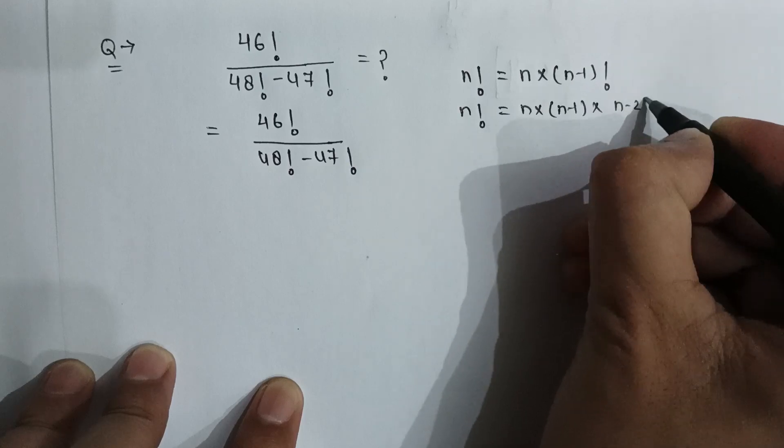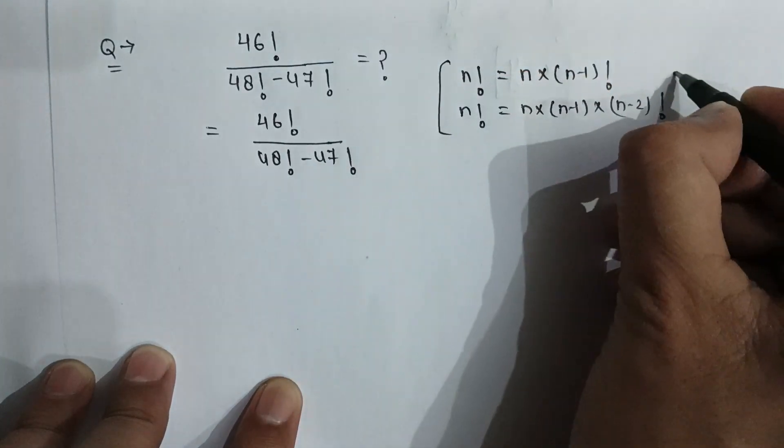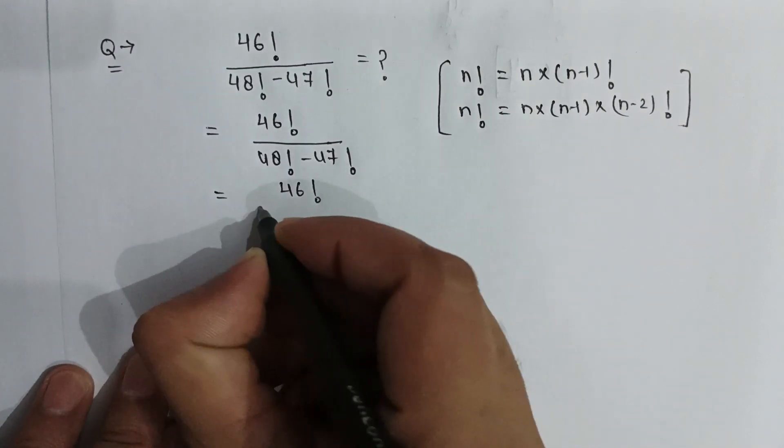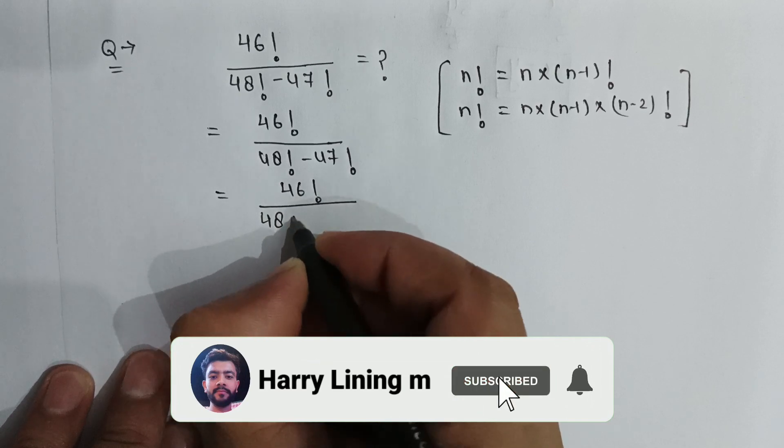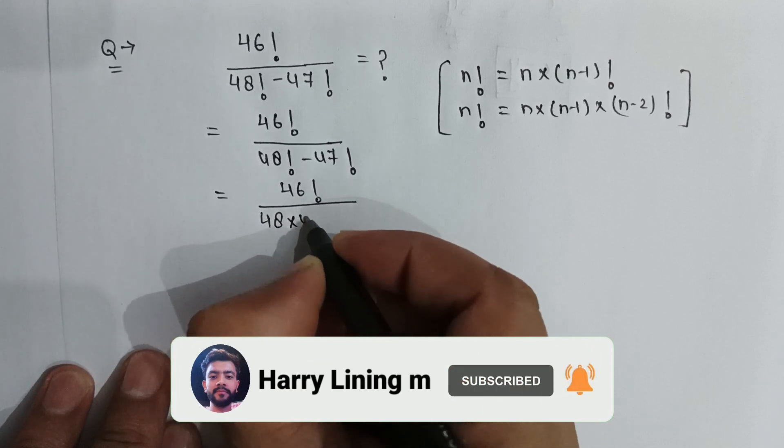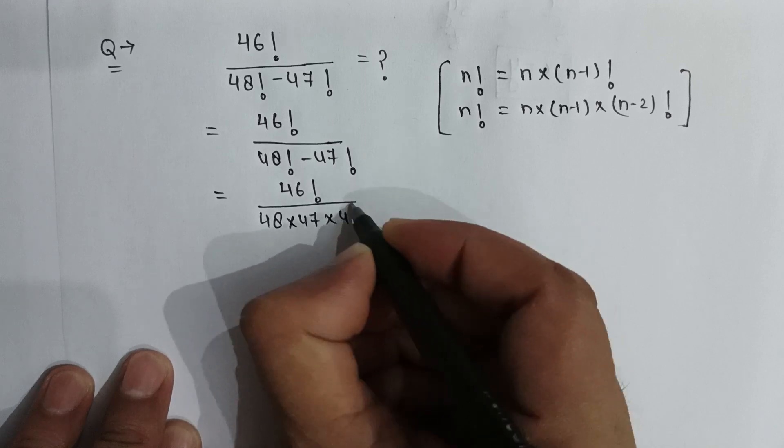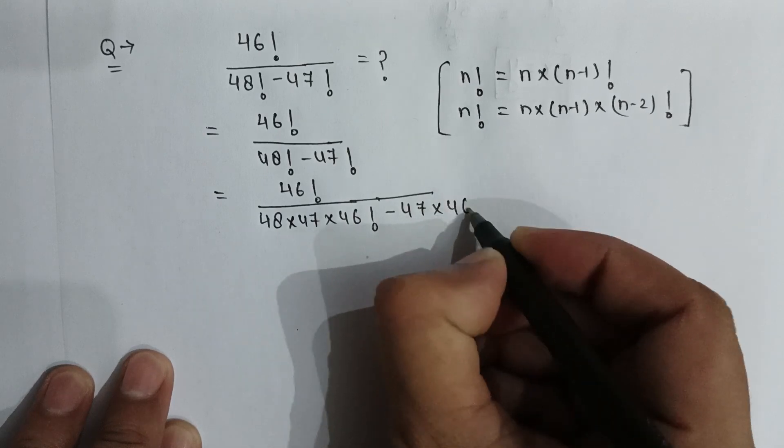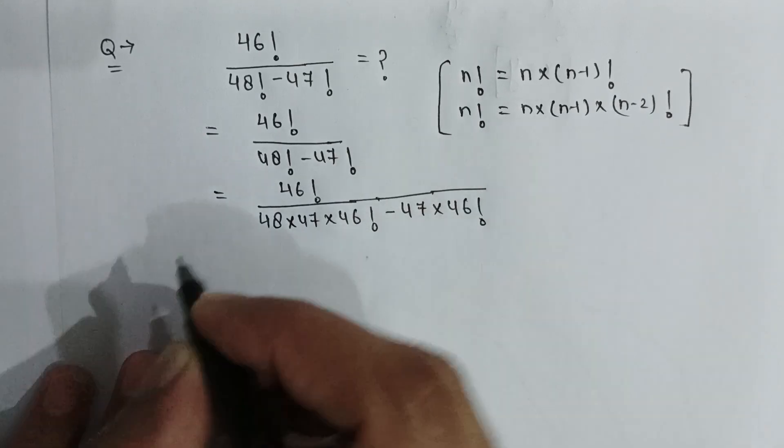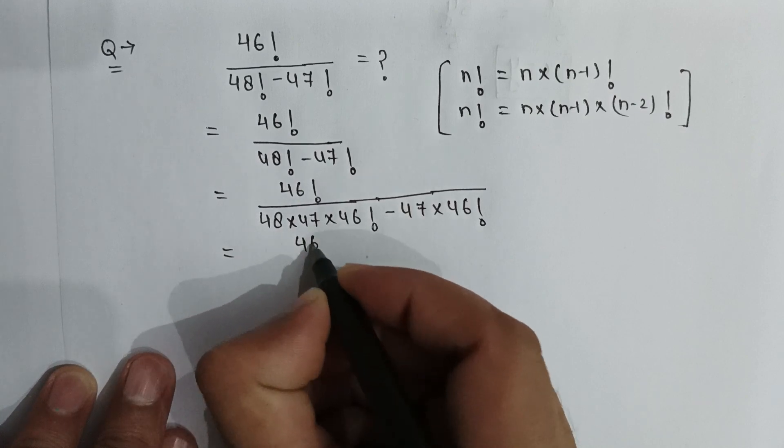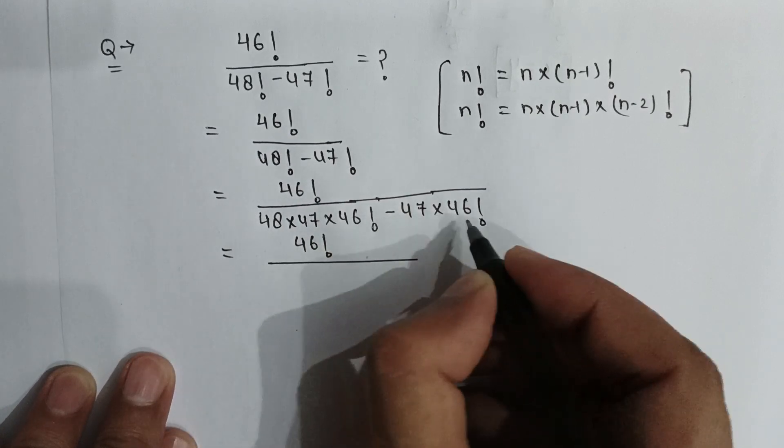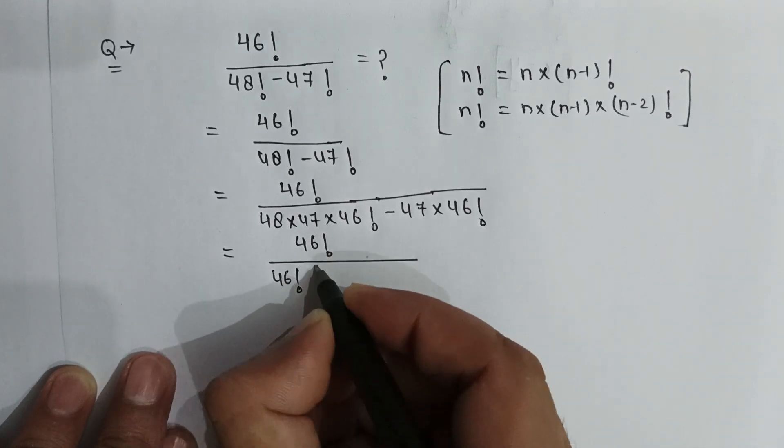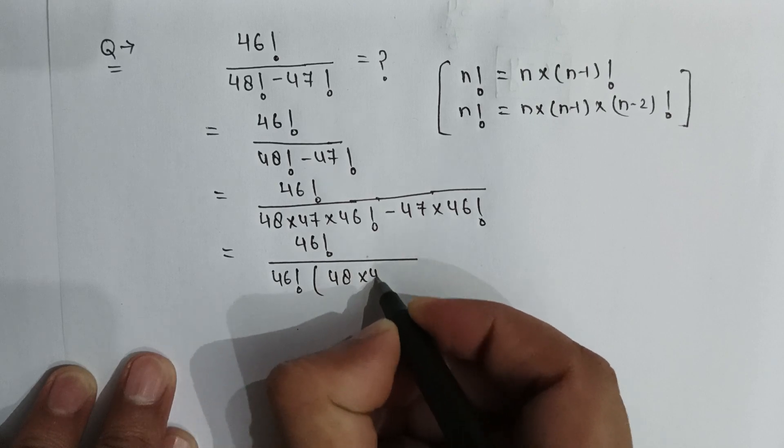So here 46 factorial divided by 48 multiplied by 47 multiply by 46 factorial minus 47 multiply by 46 factorial. It will be 46 factorial divided by, if we take 46 factorial common from these two terms, then it will be 46 factorial multiply by 48 multiplied by 47 minus 47.